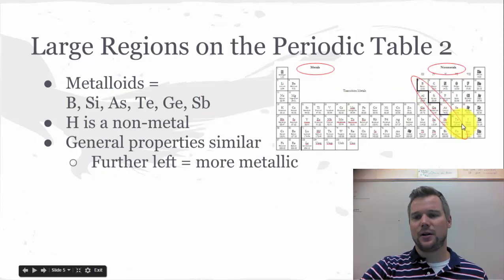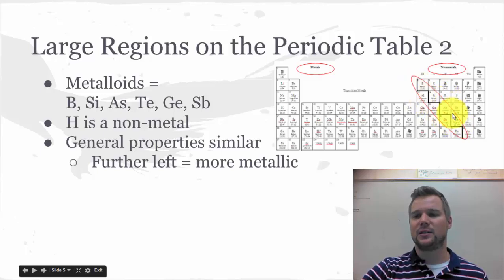The metalloids here, circled along the stairs, include boron, silicon, arsenic, and tellurium, skip aluminum, germanium, antimony. So there's six along the stairs, six on the right side of the stairs, and then two on the left-hand side of the stairs.